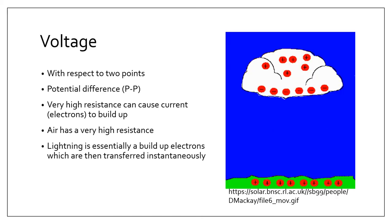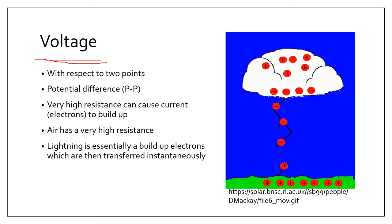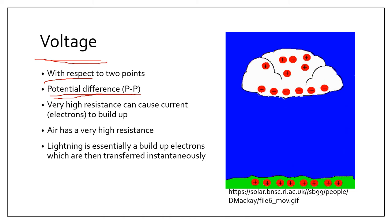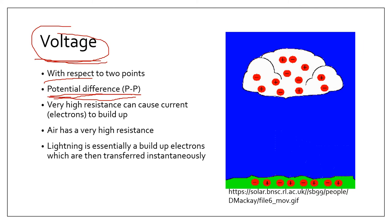Now let's discuss the details, starting with the fundamentals. Let's talk about voltage. Voltage is basically about potential — electric potential. Voltage is what we call electric potential difference: you take potential readings at two different locations and subtract them to get your voltage. It is always measured with respect to two points — it's a relative number.